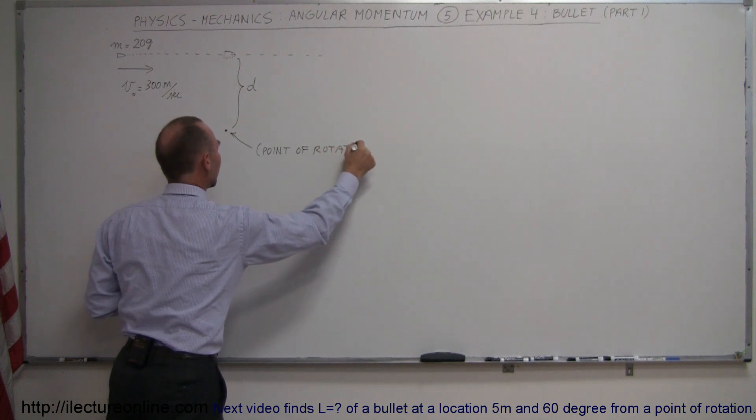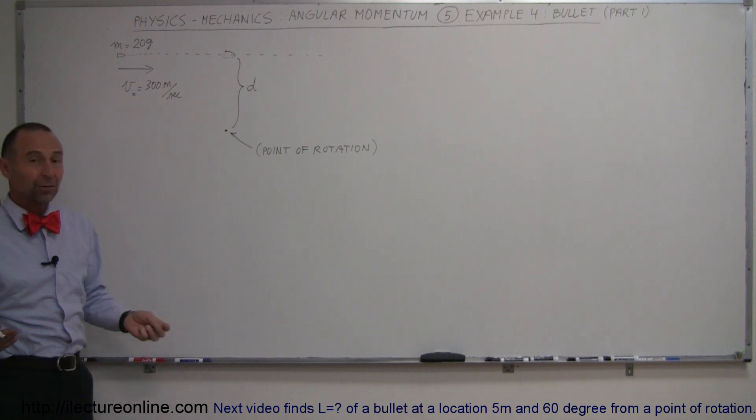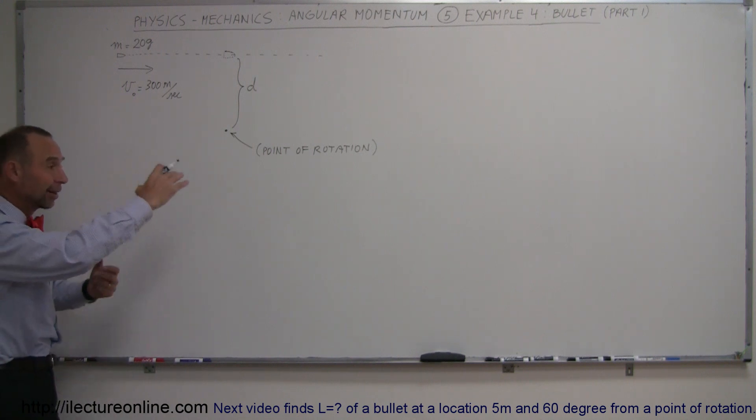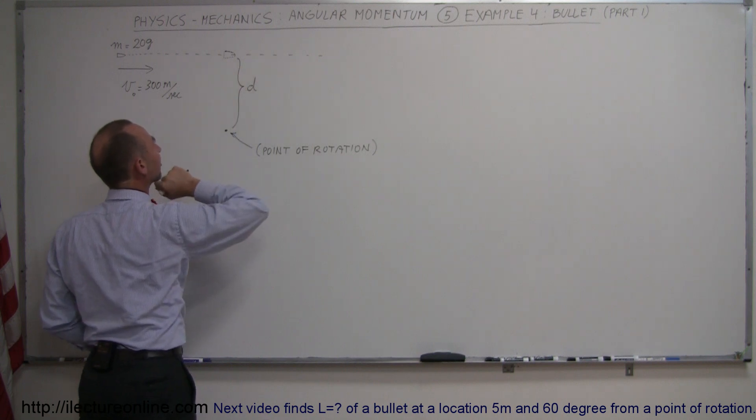Now you may say to yourself, wait a minute, a bullet traveling a straight line, there's no way that it can have angular momentum because when we talk about angular momentum, we talk about things that are rotating and the bullet's not rotating. Well, the way you look at it is, what would be the angular momentum of the bullet when it reaches this point right here? Let's start with that example.